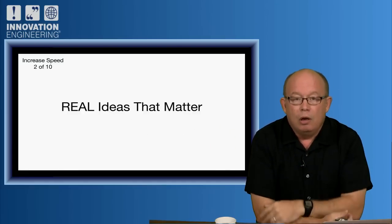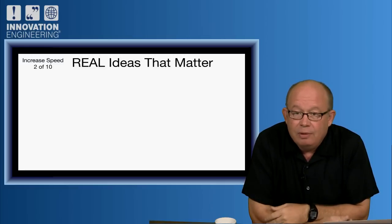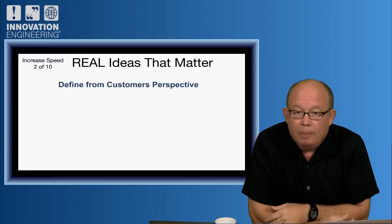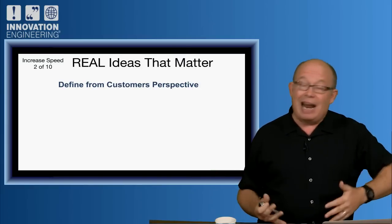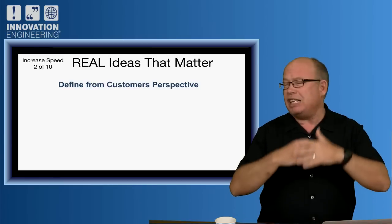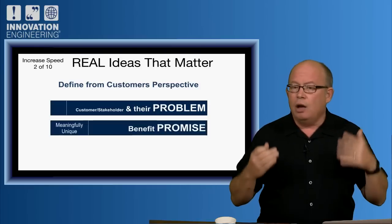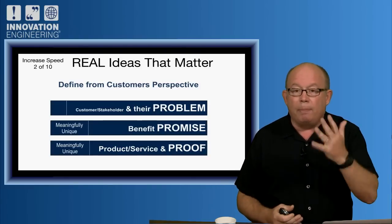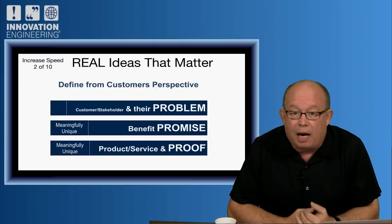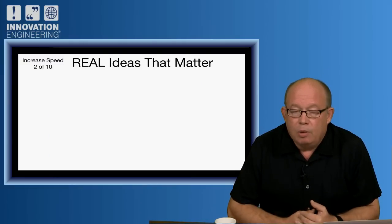Number two: do real ideas that matter. Real stuff, real things that matter from the customer's perspective, which means you're going to have to translate. I don't care about your technology. I want to know what's the problem you're solving, what are we promising, and then give me the proof for how you do it. Problem, promise, proof. A complete MBA in marketing on one slide.